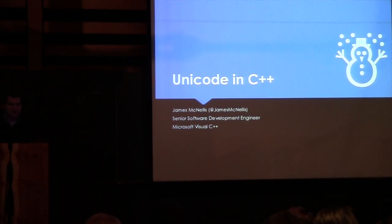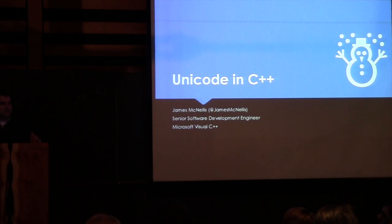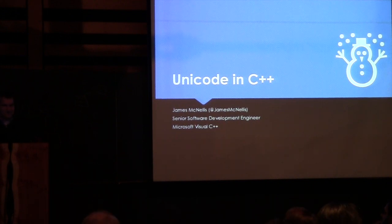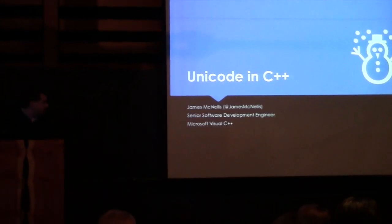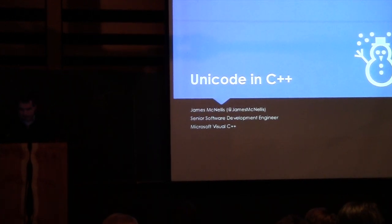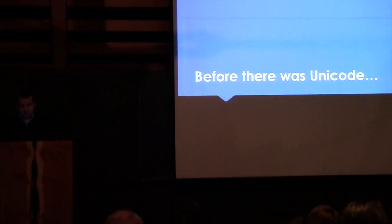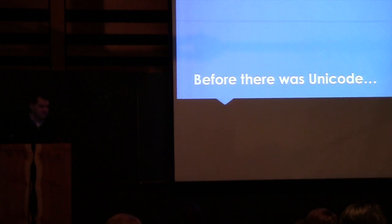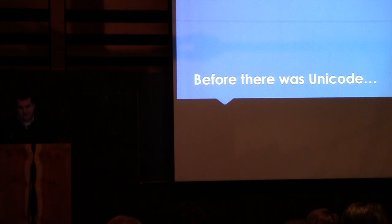We're going to start by looking at a bit of history, looking at text encoding in general. We'll look at the history of Unicode and how we ended up where we are now, because it helps explain why a lot of software systems are the way they are. We'll look at the support — or lack thereof — in the C++ standard library for Unicode string processing, and then we'll look at a couple of libraries that can help with that. So before there was Unicode — Unicode has only been a standard for about 20-something years — we were still processing text in computers. So how did we do that?